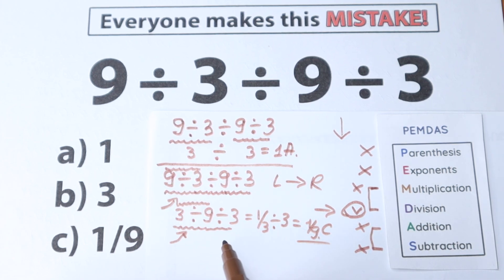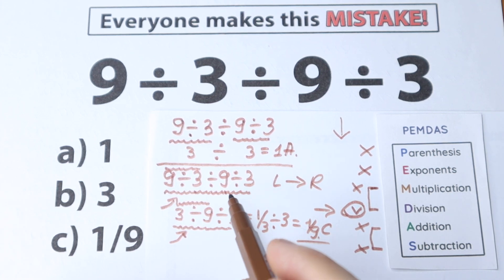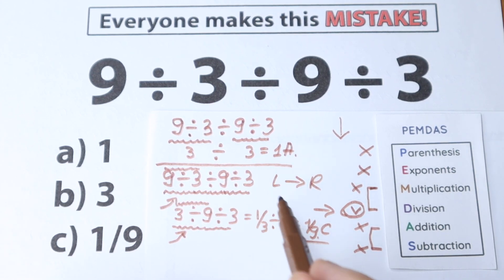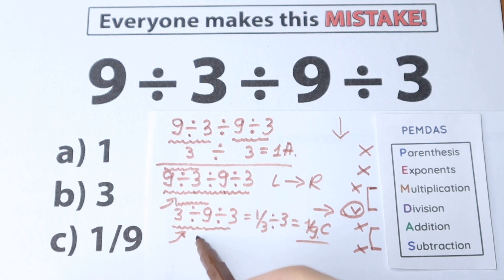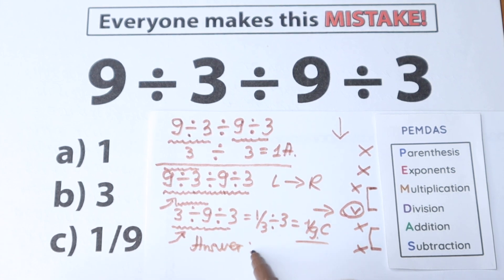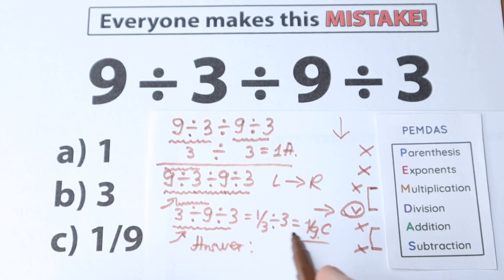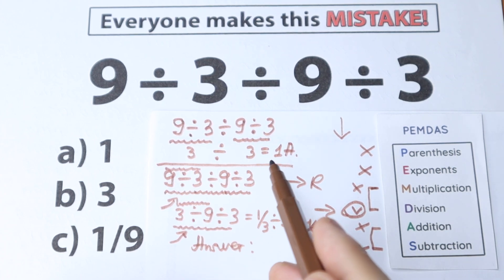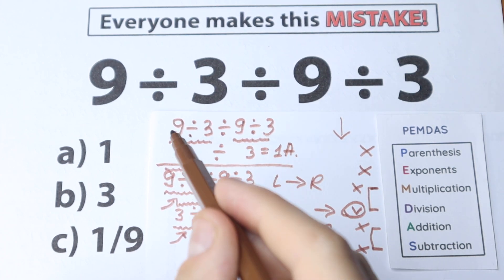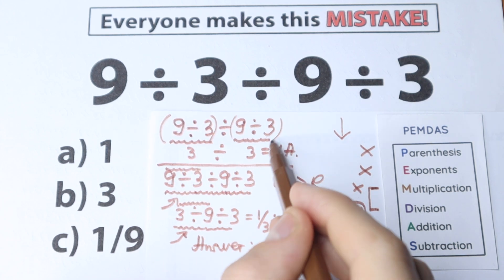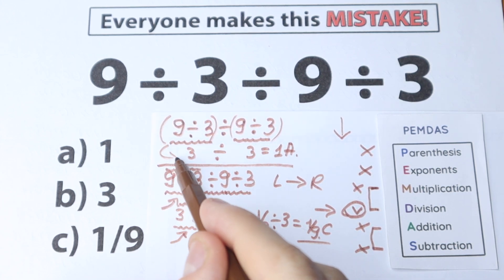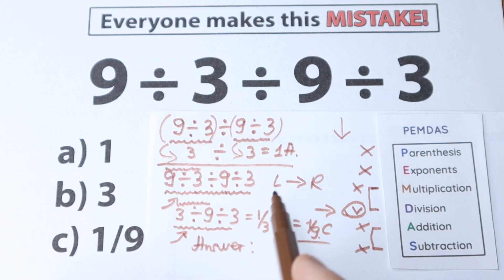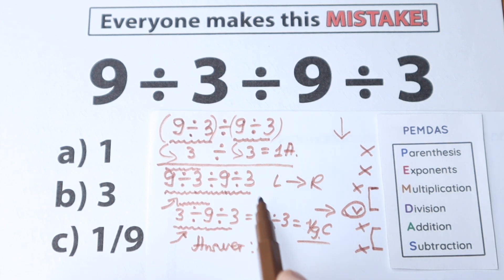This is a completely different answer from Option A. The correct answer is 1/9, because we solved it according to the correct order of operations. Option A — answering 1 — is incorrect because it jumps around rather than going left to right. Of course, if you put parentheses around (9÷3) and (9÷3), then Option A would be correct. But since we don't have any parentheses, the correct answer is 1/9.